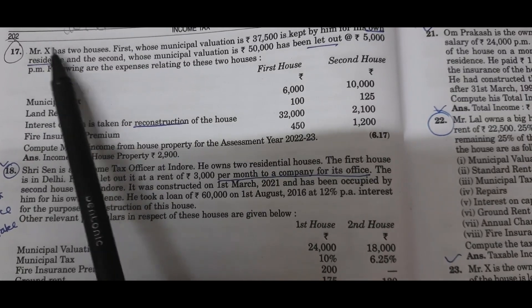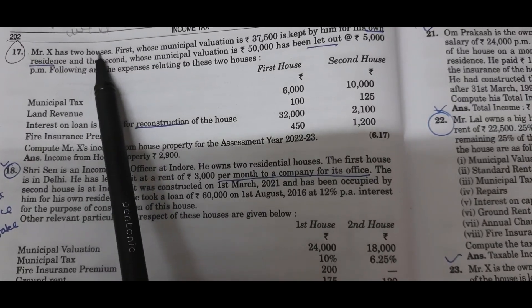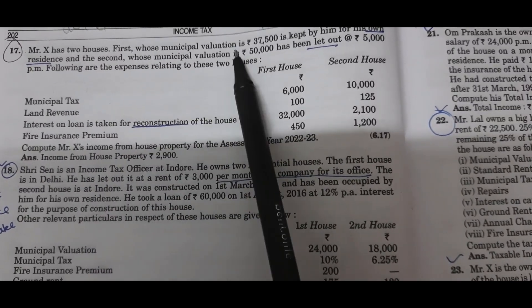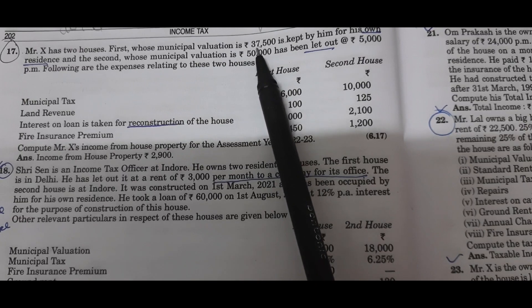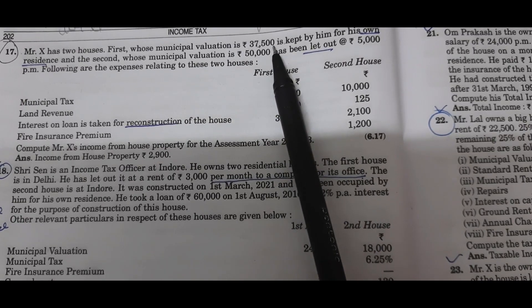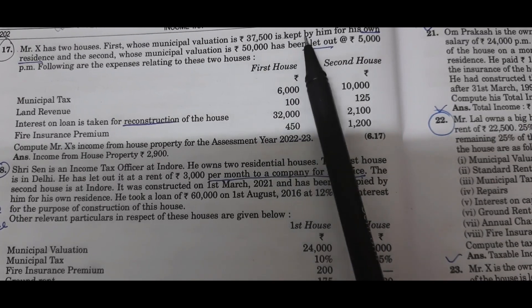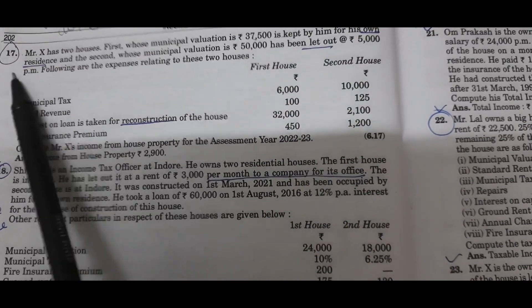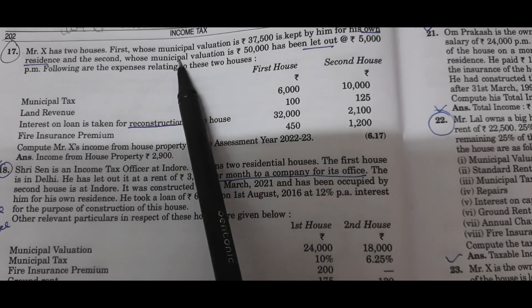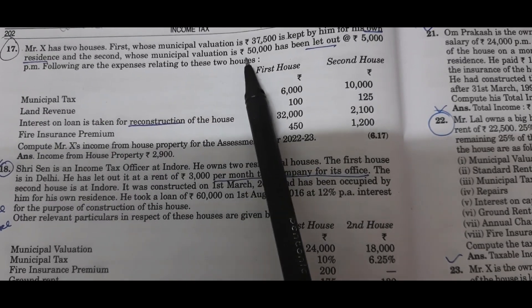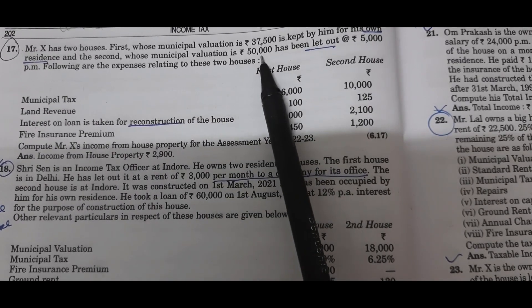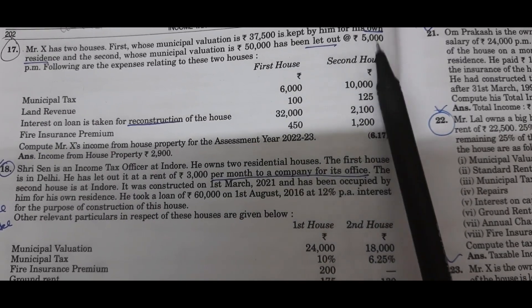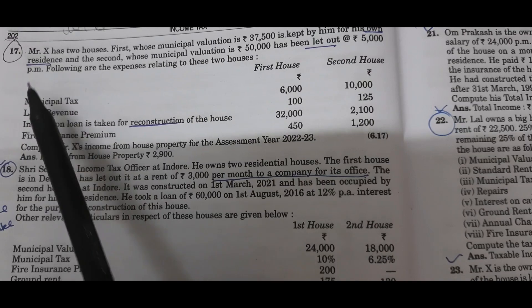Question number 17. Mr. X has two houses. The first house, whose municipal valuation is Rs. 37,500, is kept by him for his own residence. The second house, whose municipal valuation is Rs. 50,000, has been let out at the rate of Rs. 5,000 per month.